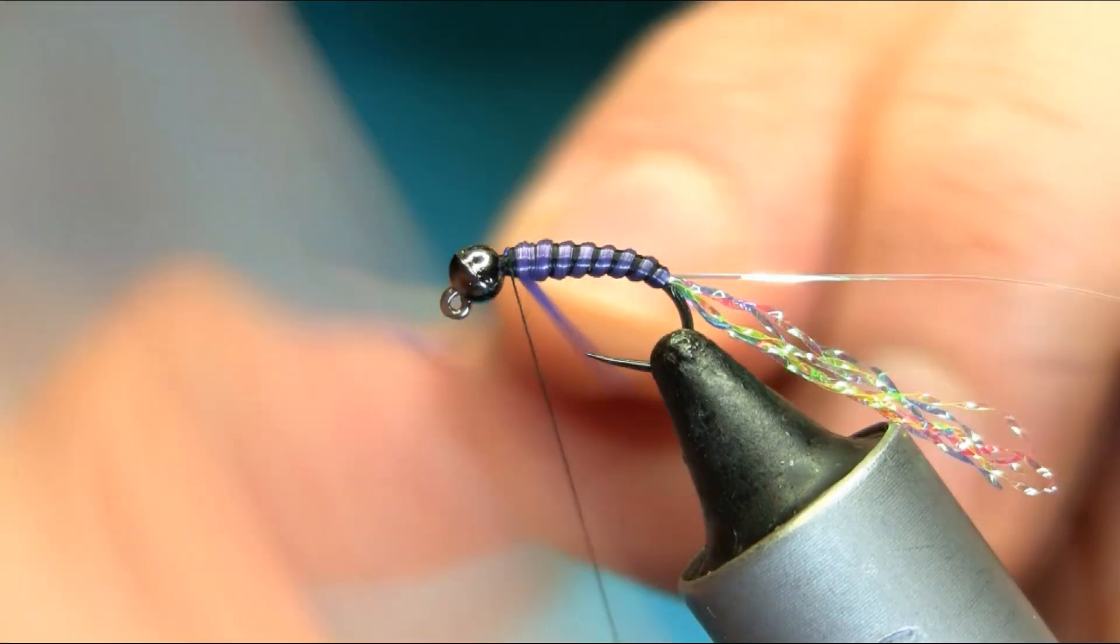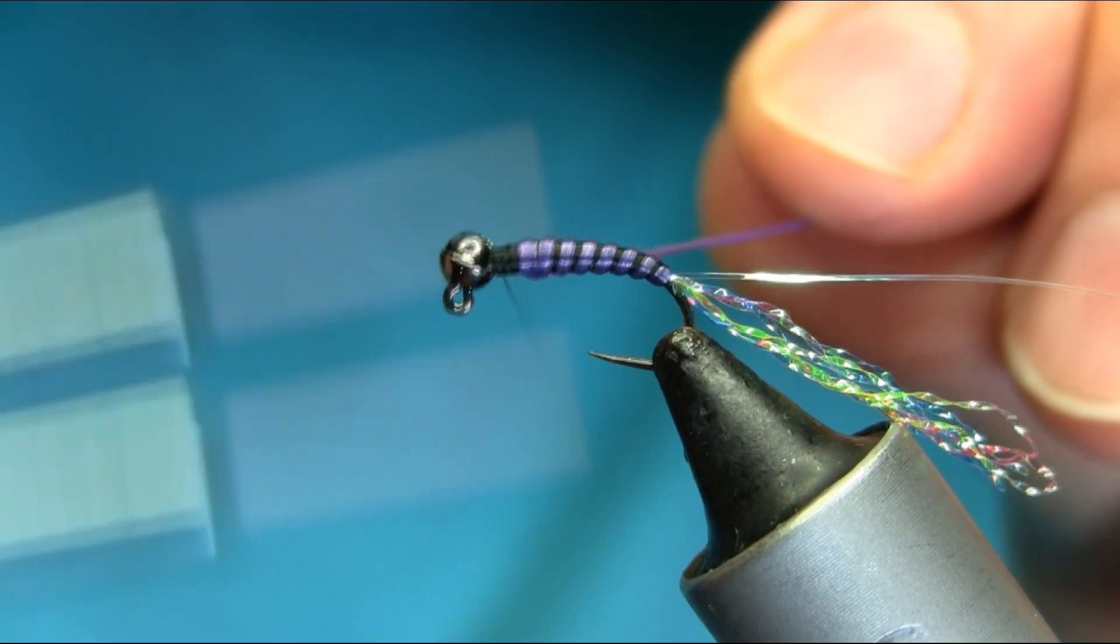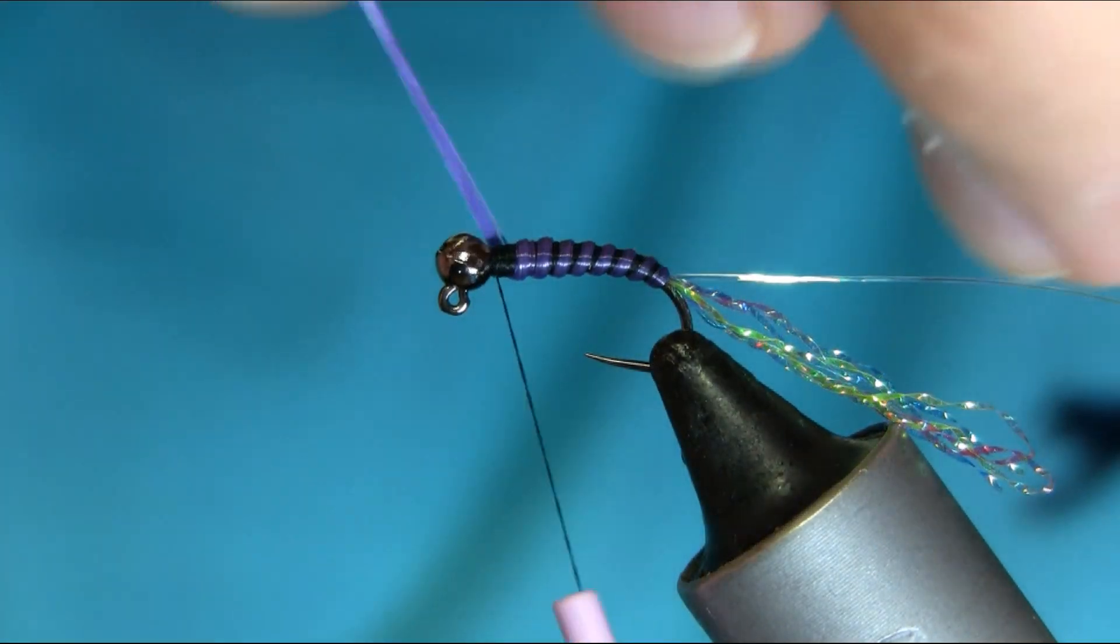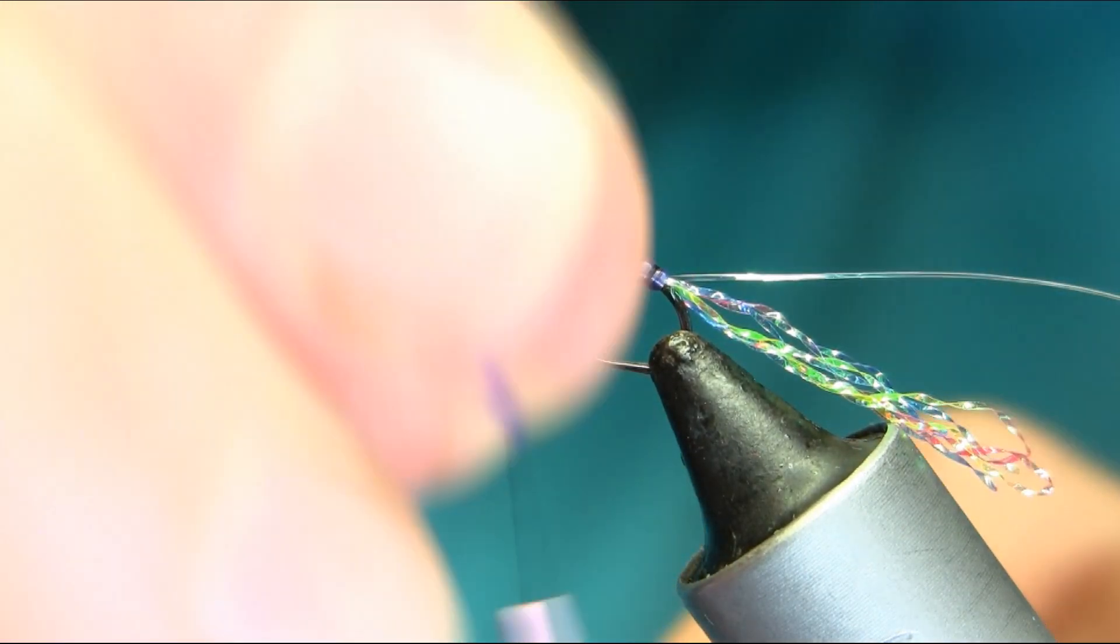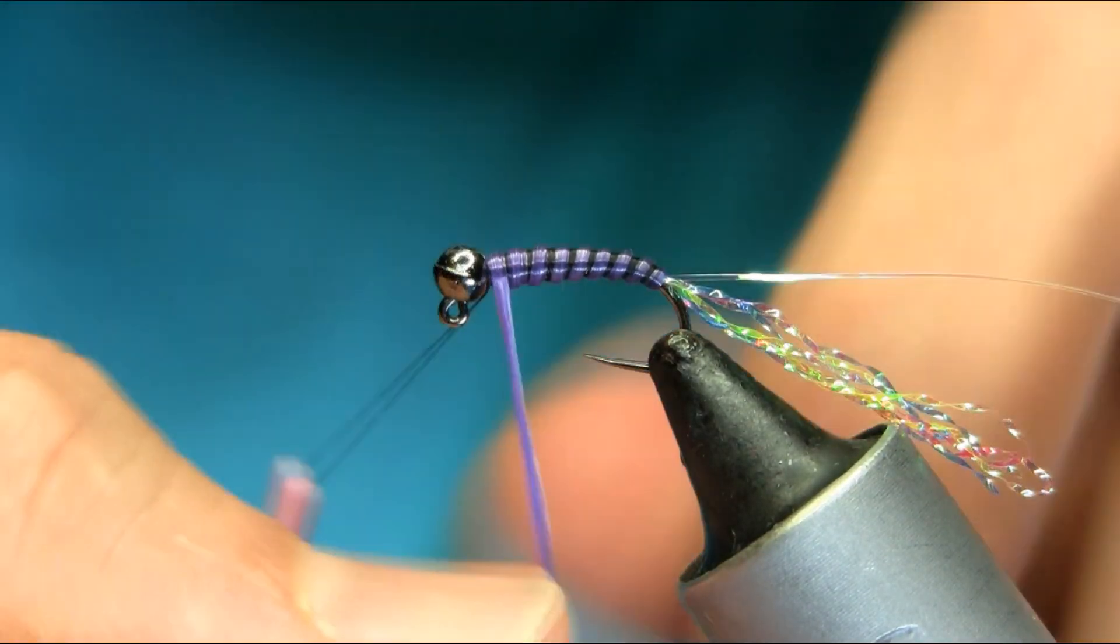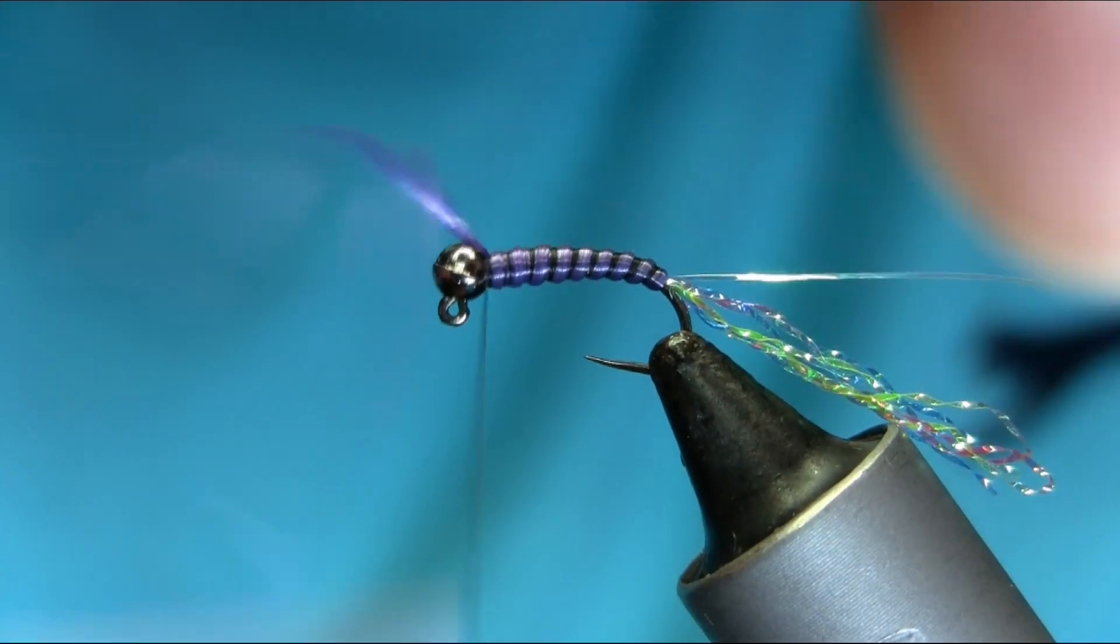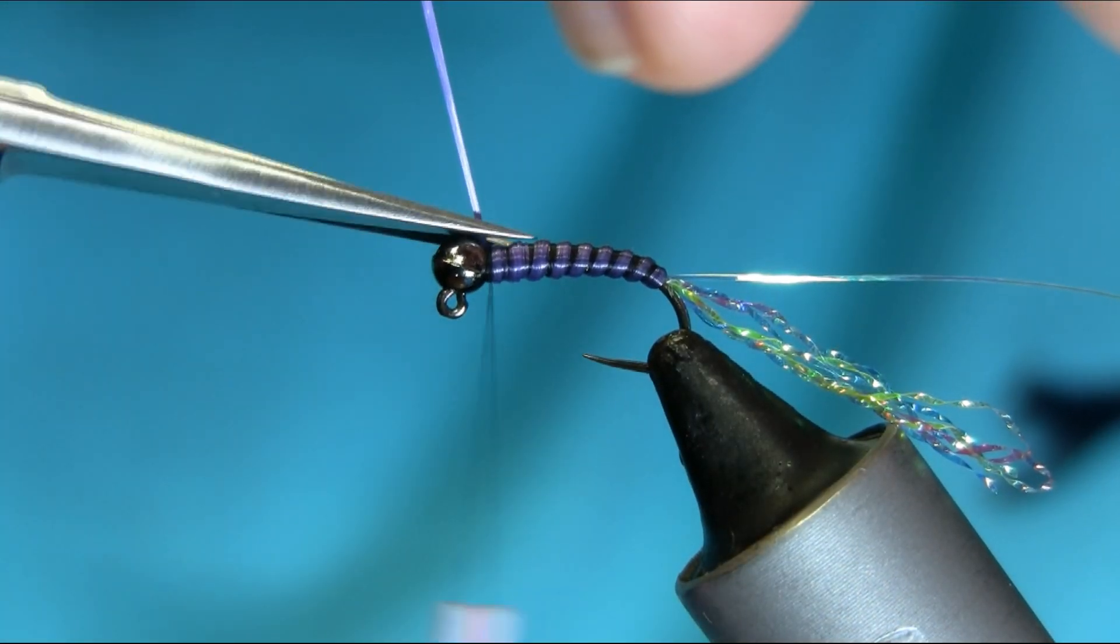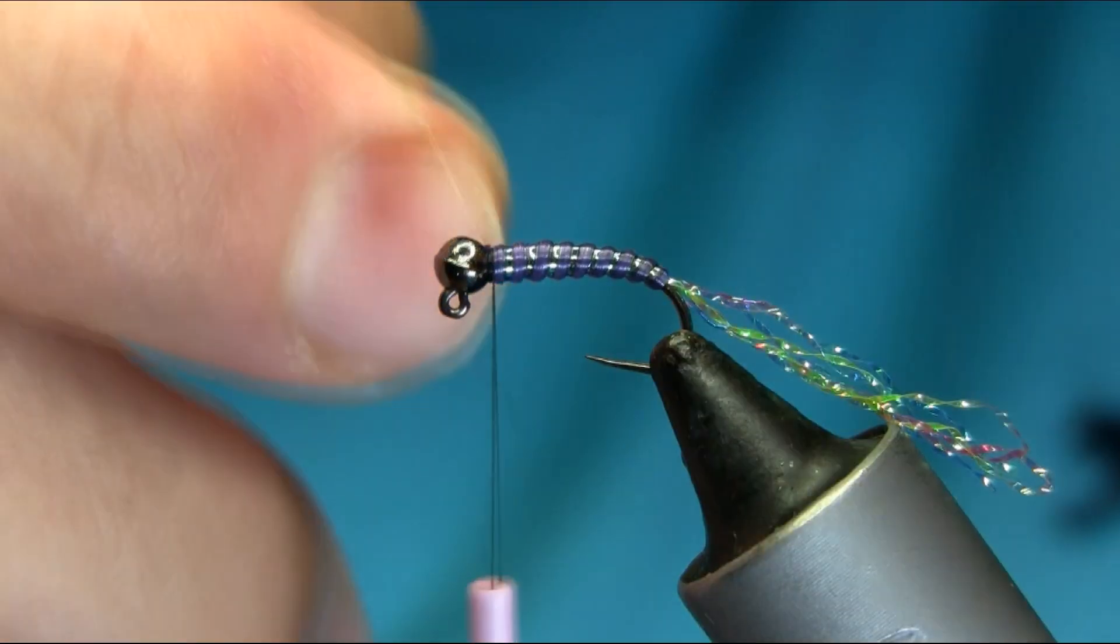Now here I'm going to just build up a nice... Didn't realize the Spawn Flex is splitting actually. Now secure this. And take this off. Bring this holographic tinsel through the ribs. And secure it.